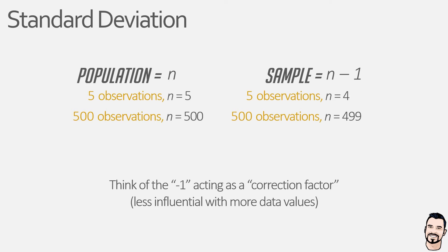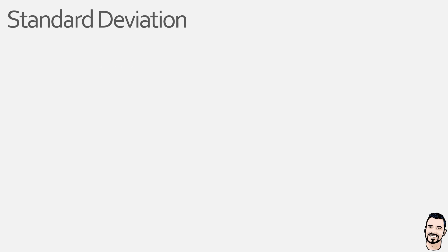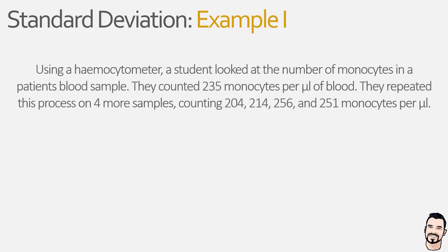To help make sense of our standard deviation equation and what we just learnt, we are going to calculate the standard deviation of two example data sets. So in our first example, we have a student who is counting the number of monocytes in a patient's blood sample using a microscope and haemocytometer. During their first count, they note 235 monocytes per microlitre of blood.